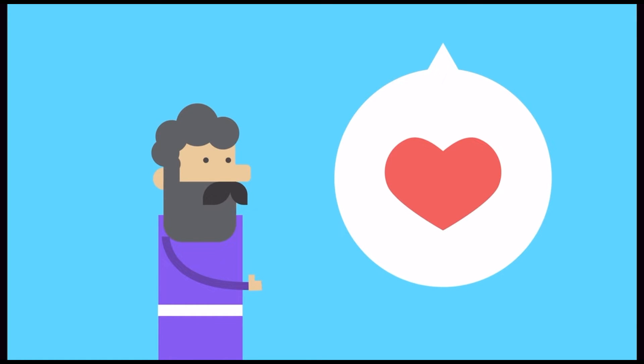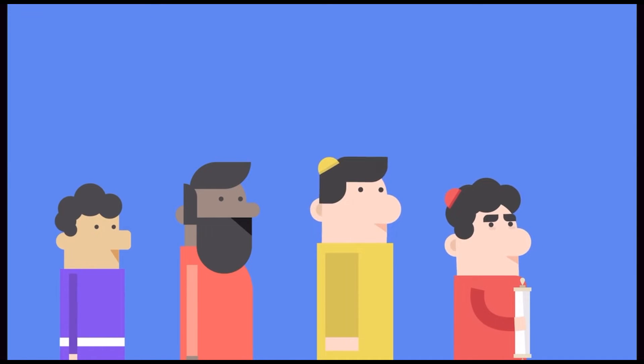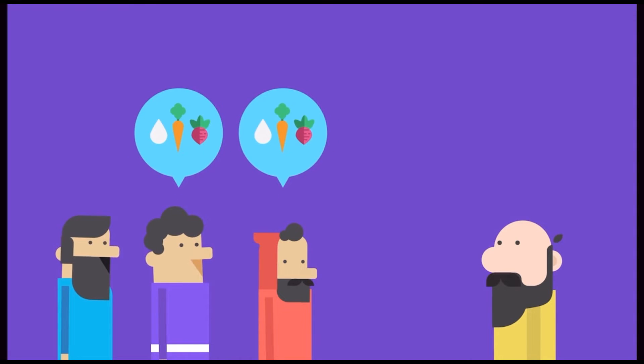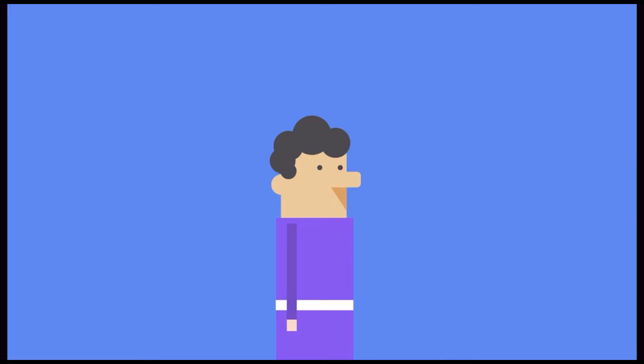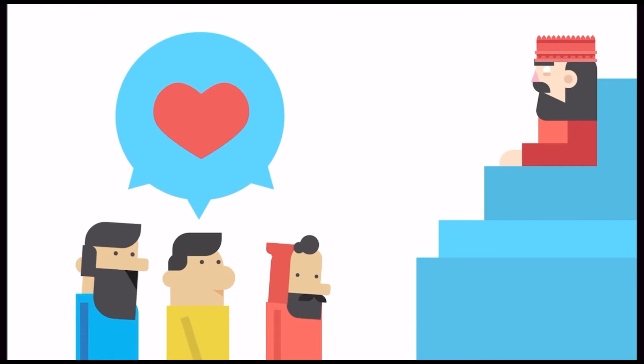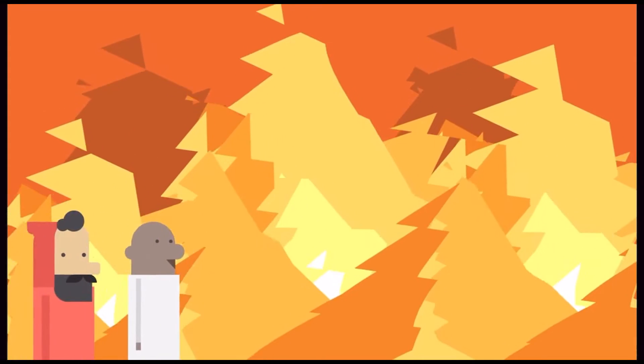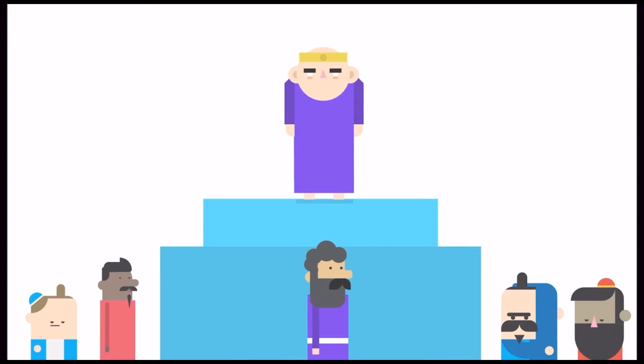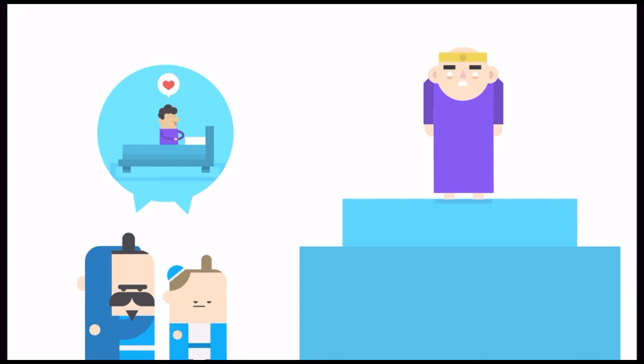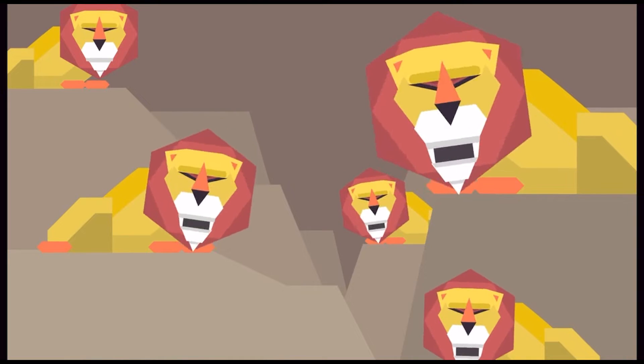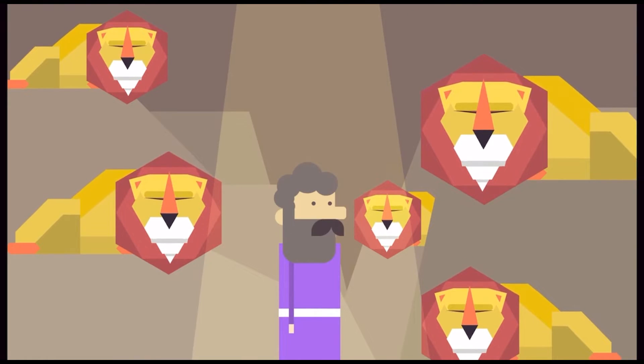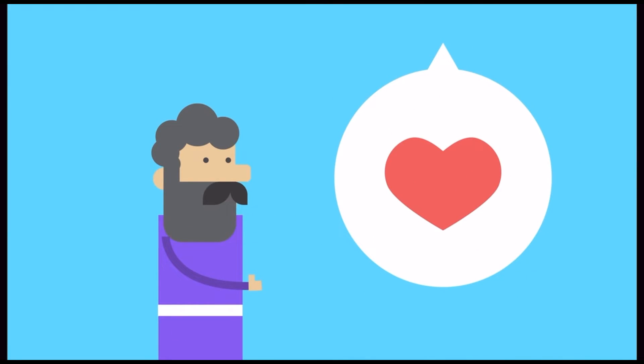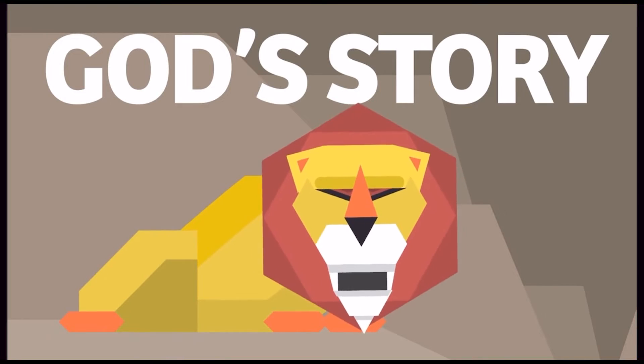So in case you missed it, here's the quick version. Daniel was taken to Babylon. He asked for vegetables. God made him strong. God gave Daniel understanding. Daniel's friends obeyed God instead of the king. They got punished. God rescued them. Daniel understood more dreams. He was the king's favorite. Others got jealous. Daniel obeyed God instead of the king. He got punished. God rescued him. Daniel served God no matter what. And that's a part of God's story.